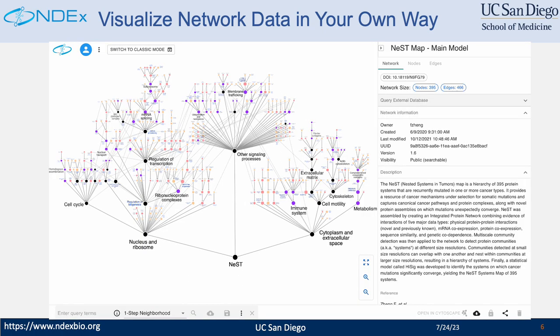Here is an example of another network in NDEX. It is a hierarchy of 395 protein systems that are mutated in one or more cancer types. You can see it has a totally different layout and visualization styles from the previous network. The layout of this network reflects the hierarchical structure of the data.